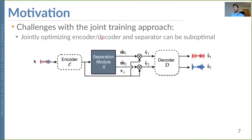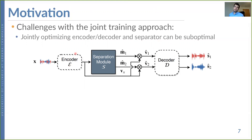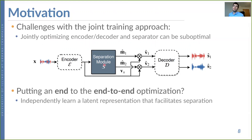The motivation behind this work is that there are some challenges with this joint end-to-end training approach. By jointly optimizing all parts of the network, the training procedure could lead to some sub-optimal parts — for example, the encoder or the decoder.